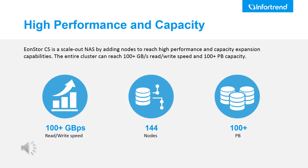As we mentioned, EonStore CS is a scale-out system. It can reach up to more than 100 gigabytes per second write performance and 100 petabyte capacity by adding up to 144 nodes into a single scale-out cluster.